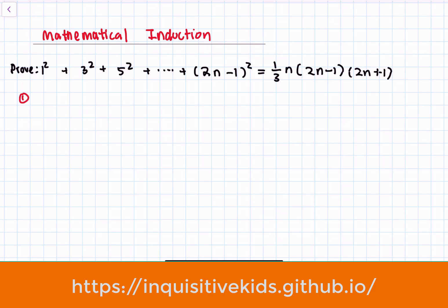Our first step is to see what happens when n equals 1. When n equals 1, we have 1 squared is equal to one-third times 1 times 3, since 2n minus 1 is just 1 and 2n plus 1 is just 3. So we have 1 is equal to 1, and this equation is true, so the formula holds true when n is equal to 1.